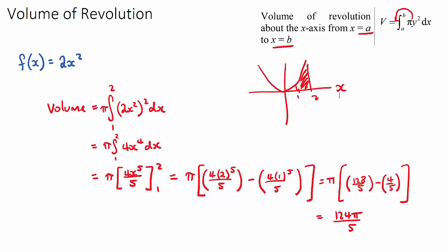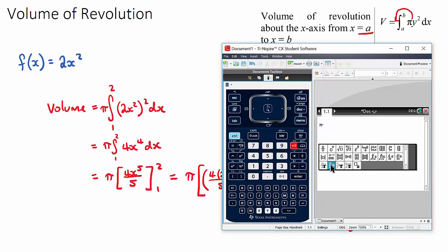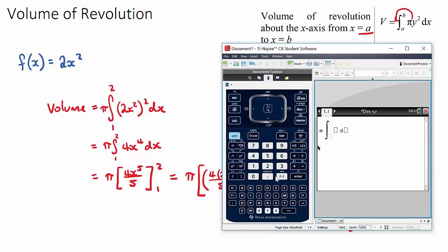Now on our calculator, these questions are typically in a calculator exam. So we can solve it just by going pi multiplied by our definite integral between 2 and 1. And we'll have our function which is 2x squared. And we need to square this. And we just have a dx at the end.